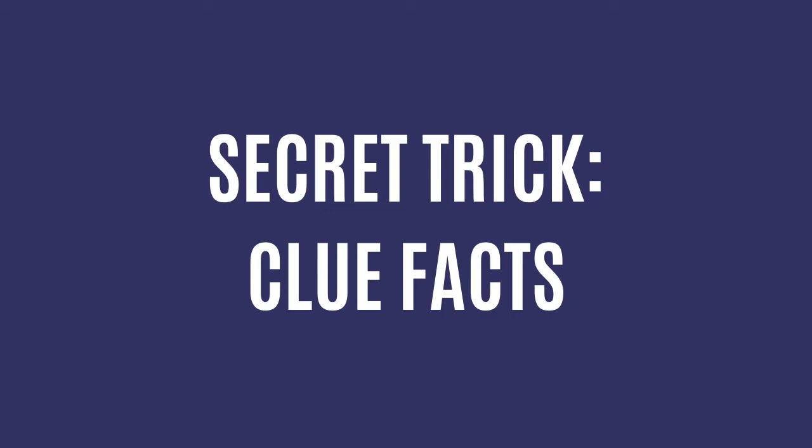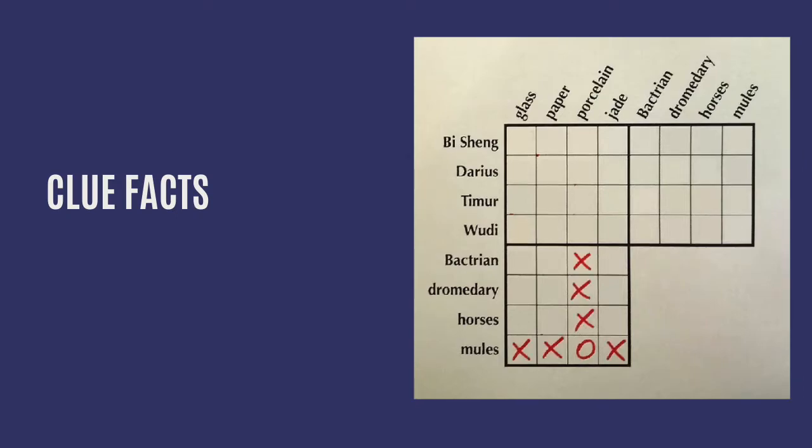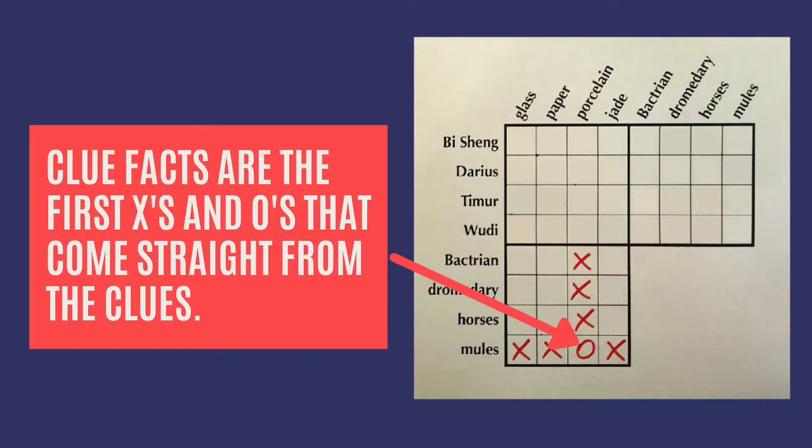Here is the secret trick for creating logic grid puzzles. Pick your clue facts before you write the clues. What are clue facts? You know how when you're solving a puzzle, there's two kinds of X's and O's. There's the X's and O's you put in first from a clue, and there's the extra X's and O's that you fill in based on the first ones. The clue facts are those first X's and O's, the ones that come straight from the clues.